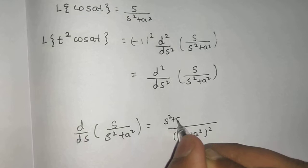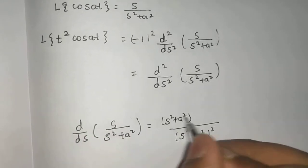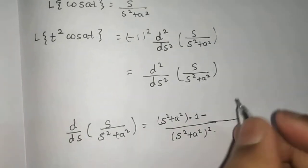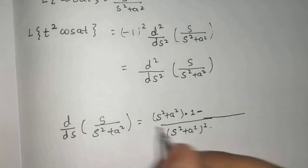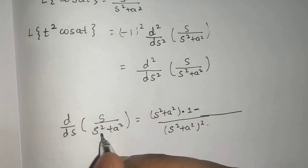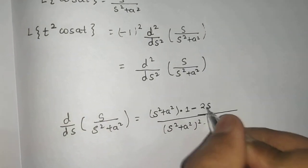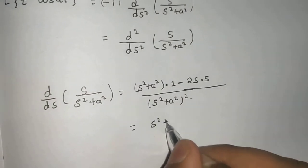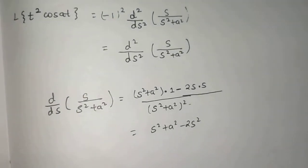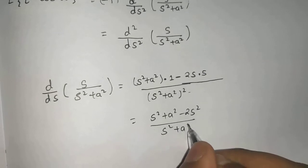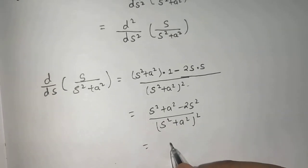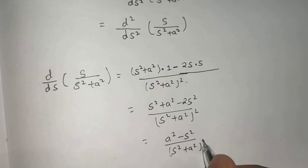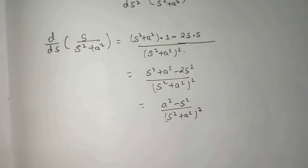Squaring the denominator, we differentiate the numerator: derivative of s is 1. Minus sign always comes in the middle, then differentiate the denominator, giving 2s, with numerator as it is. Simplifying: (s²+a²) − 2s² all divided by (s²+a²)², which gives (a²−s²)/(s²+a²)².